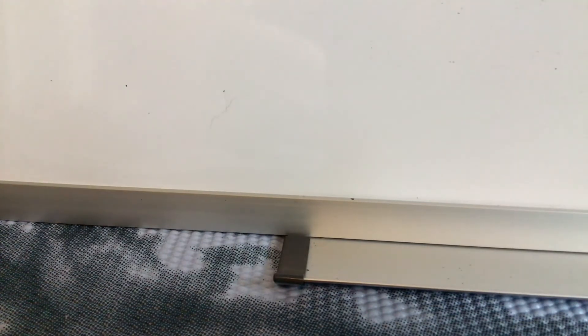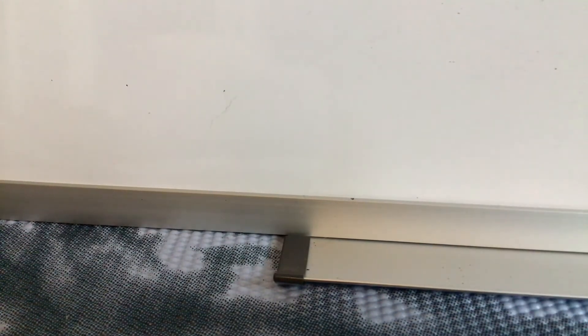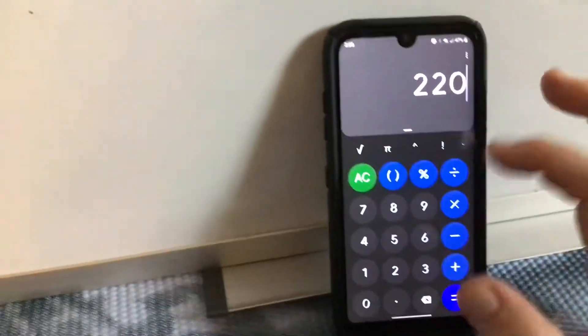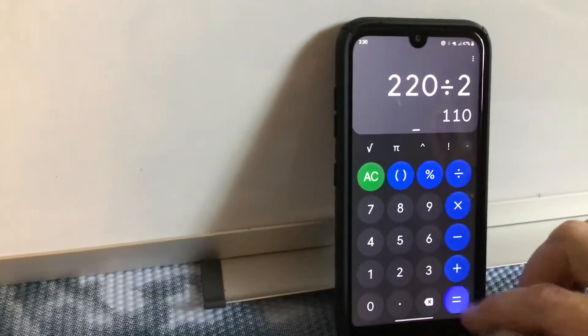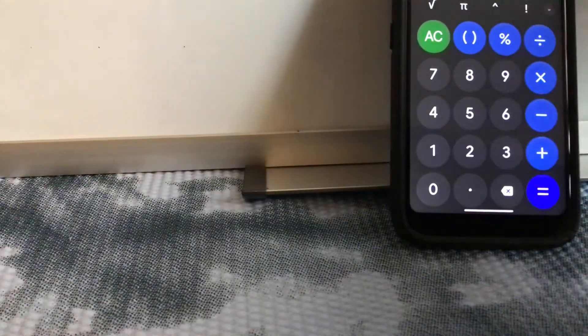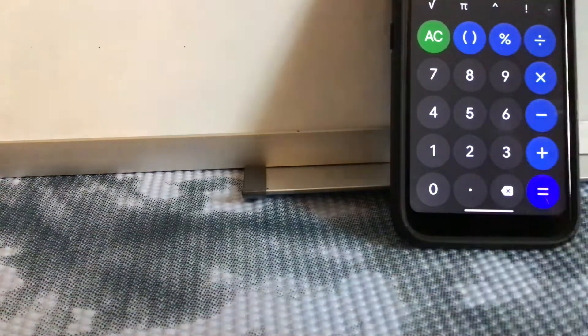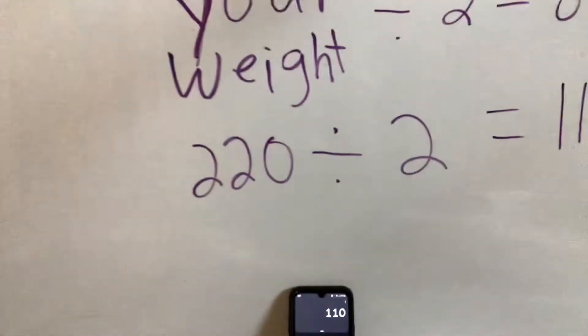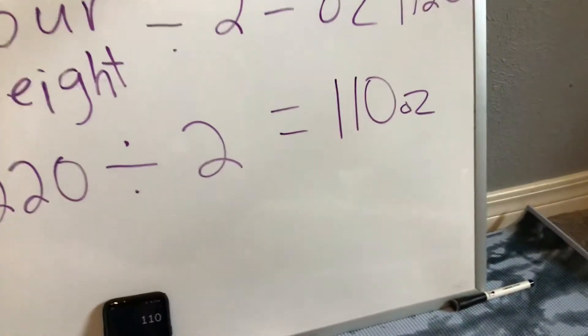I know what that is, but I just want to show you on the calculator as well. We got here calculator. 220 divided by two equals 110 ounces.